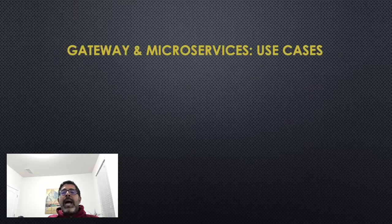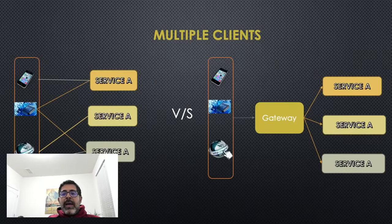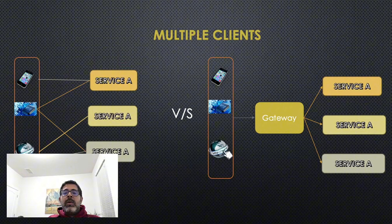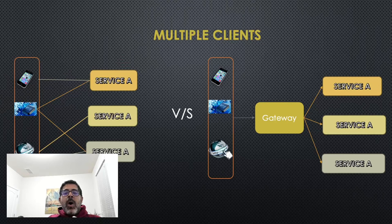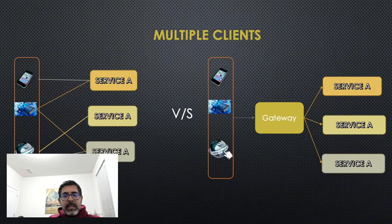Let's take a look at some of the use cases and why we need a gateway. The first scenario is when you have multiple clients that each want different data with different format or sizes. This means every service needs to cater to different clients, which also means different rate limits, different security authorization for each client, separate logging, and so on. As you can see, this quickly becomes a hot mess versus hiding services behind a gateway which takes care of all those cross-cutting concerns.